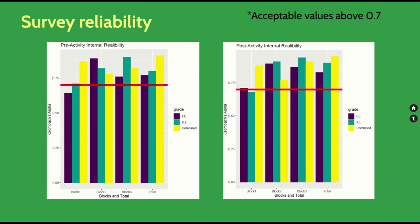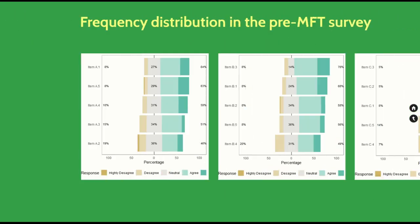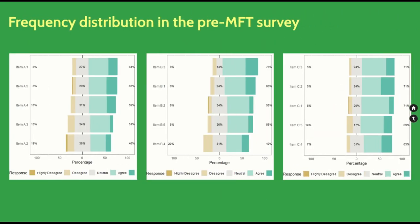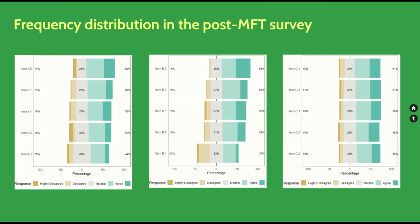The surveys have high reliability with an alpha value higher than 0.9 before applying the microflip teaching application. We can see in three graphs the frequency distribution of each block of items in the survey conducted before applying microflip teaching. In general, almost all items have a high agreement rate above 50%. After the experience, almost all items have gained a high rate of agreement; however, these results are lower overall than in the initial survey.